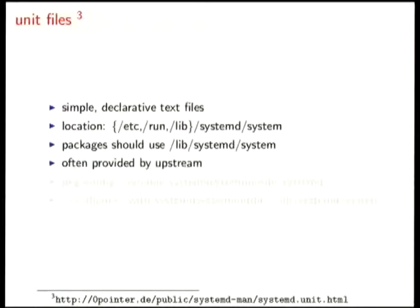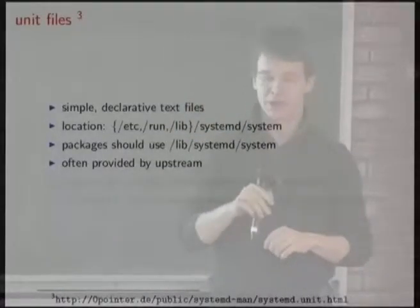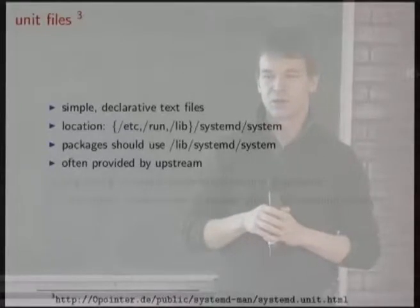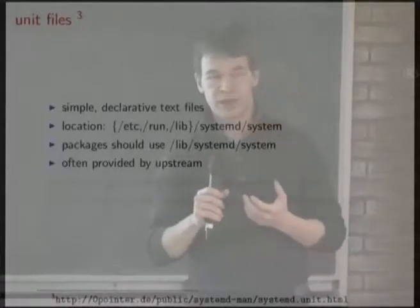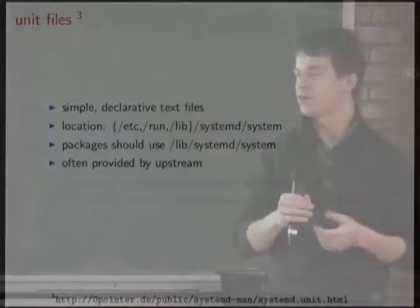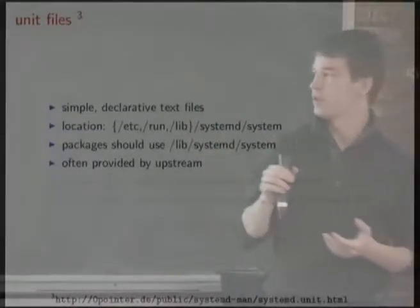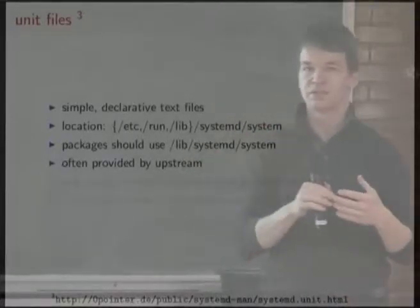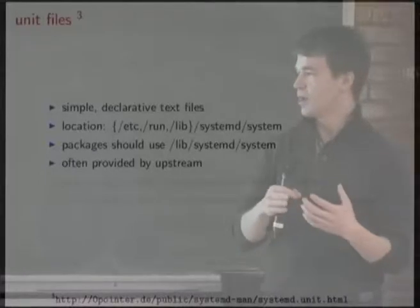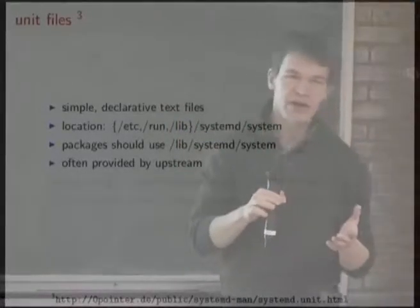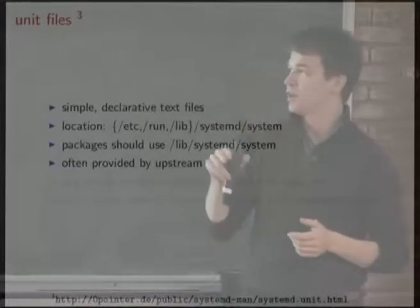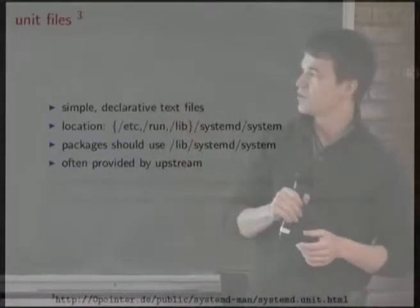Unit files are simple declarative text files. There's an override mechanism being used more and more in packages: the package ships its configuration source file — its default file — under /lib/systemd. If you have to dynamically change it, you put that in /run. And if an administrator has to overwrite a unit file or service file, they put it in /etc, in the corresponding directories.